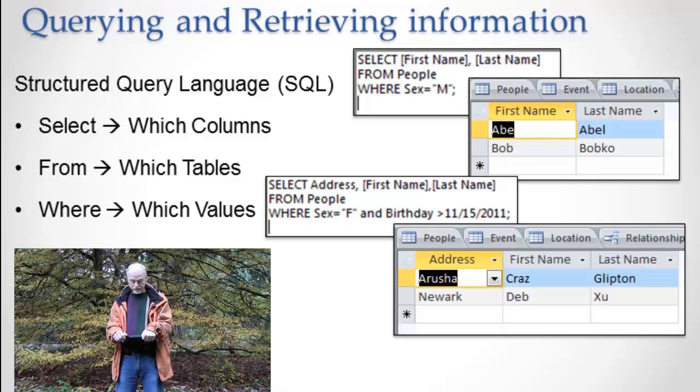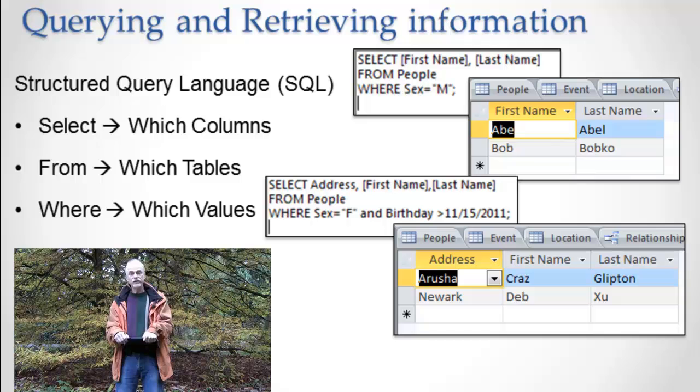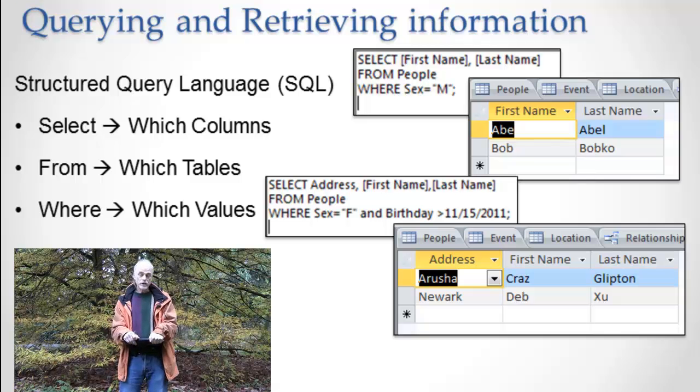And here's how I'm going to construct a few simple ones. Select first name and last name. So what does that mean? It means I want to see the first name and the last name columns in my results. I want to know their first name and last name. From people. People is the name of the table. So go to the people table. Grab the first name and last name column where the sex equals M.